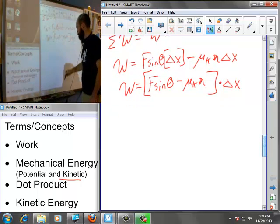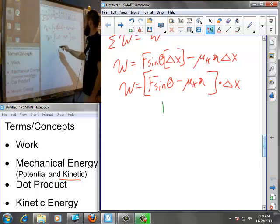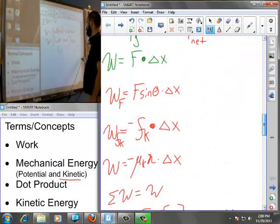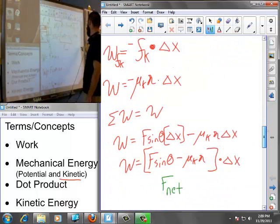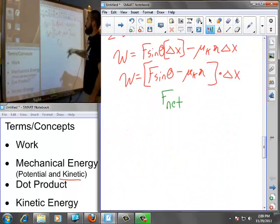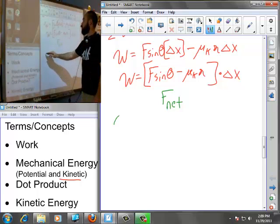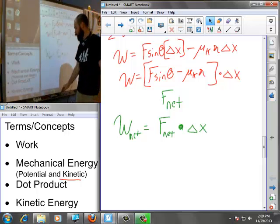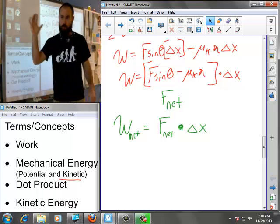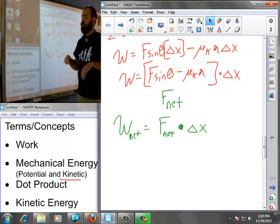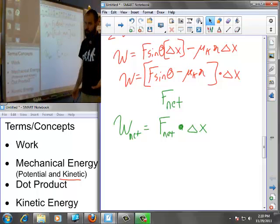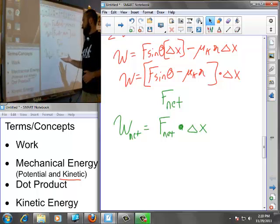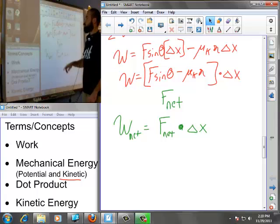All work, the sum of all work done is whatever work can be done on the object. If I added all these works together, I essentially have what is the overall work done on this object: F sine theta times delta x minus mu k n delta x. I can rewrite this as F sine theta minus mu k n all multiplied by delta x. This should look familiar. This is F net.